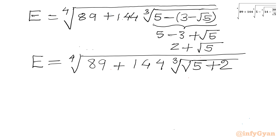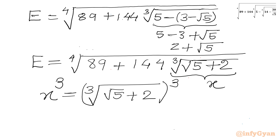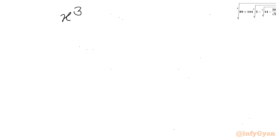Now we will simplify this cube root. Let us say x equals the cube root of root 5 plus 2. Cubing both sides, x³ equals root 5 plus 2.